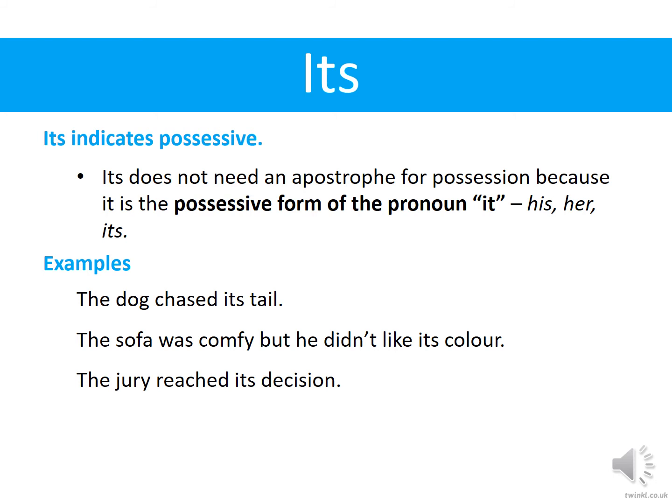'The jury reached its decision.' If you know what the jury is — it's a group of people in court that make decisions — the decision is theirs. So 'the jury reached its decision' is without the apostrophe. Let's check it: 'The jury reached it is decision' or 'The jury reached it has decision' — again those sentences do not make sense. So we don't need the apostrophe.